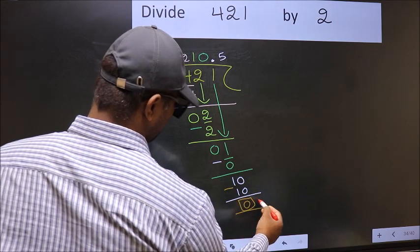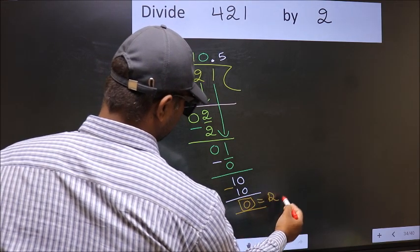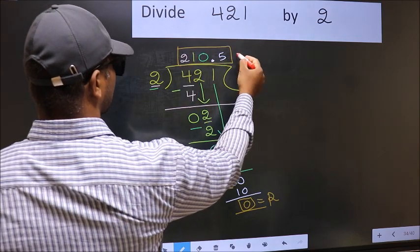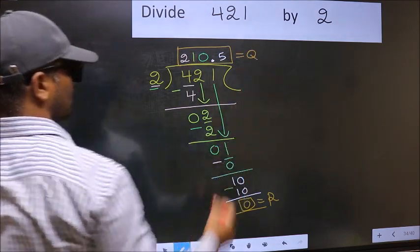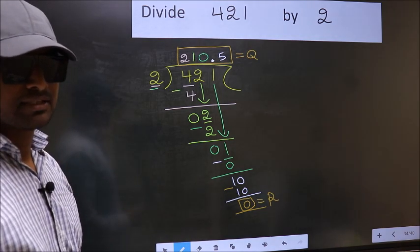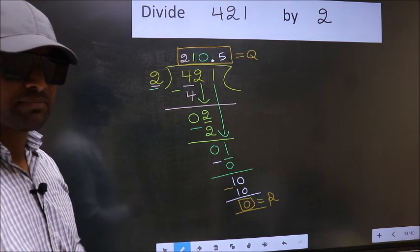So this is our remainder. And this is our quotient. Did you understand where the mistake happens? You should not do that mistake.